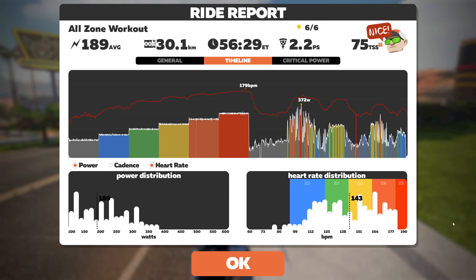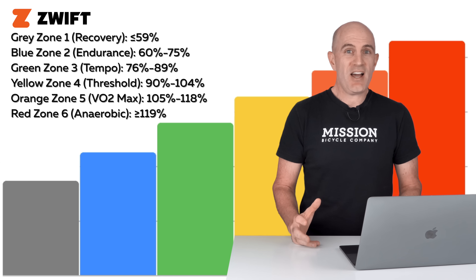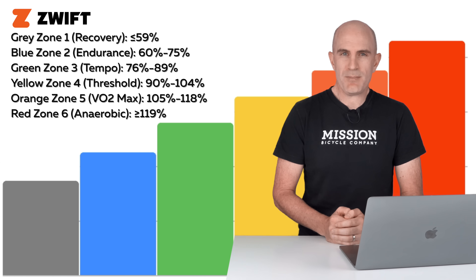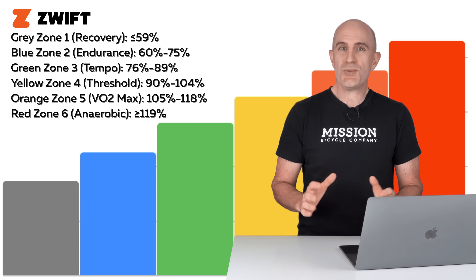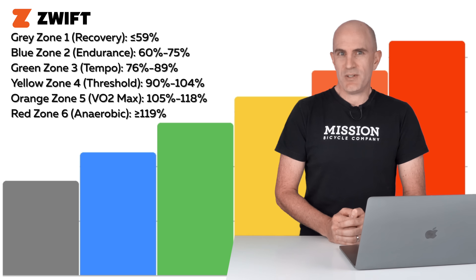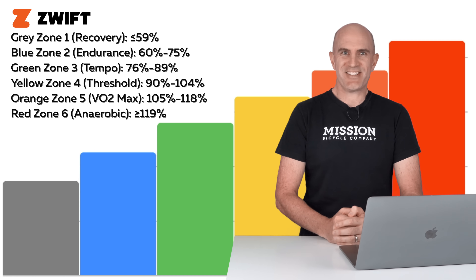Finally, once your activity is complete, the ride report will also be color-coded based on the effort you did in that free ride, workout, or race, giving you a good overview of how hard it really was. So there we are — a comprehensive overview of where those colors are used in Zwift and exactly what percentage of your FTP they relate to. Remember you do have to have your FTP set correctly, which does mean doing a few efforts in the red. Good luck with that!